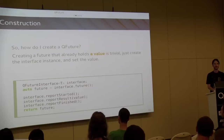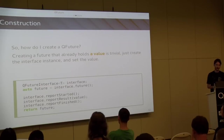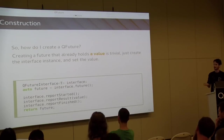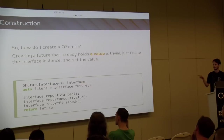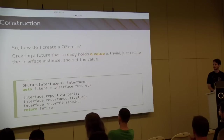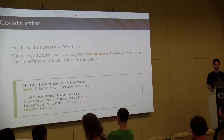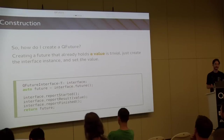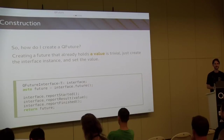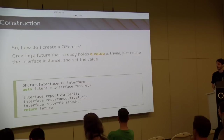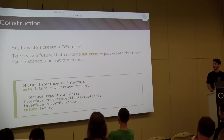What is the simplest way to create a future with a predefined value? You create a new QFutureInterface, create a future from it, say the computation has started, report the result specified by the value variable, and report that you have finished. Now you have created a future which already has a value. Unlike the default API which only allows you to create a cancelled future, you can now create a future that already has a value. If you want to create a future that has an error, it's almost the same - just instead of reporting a value, report an exception.